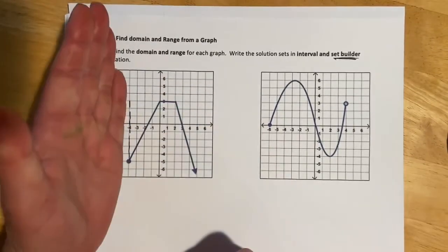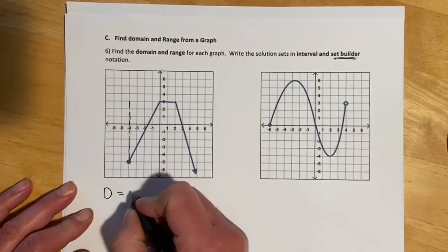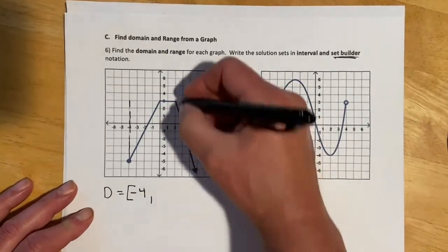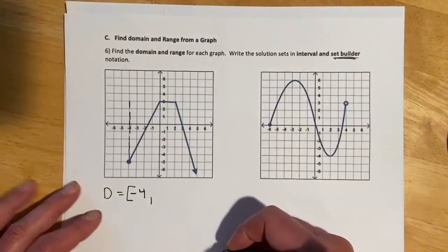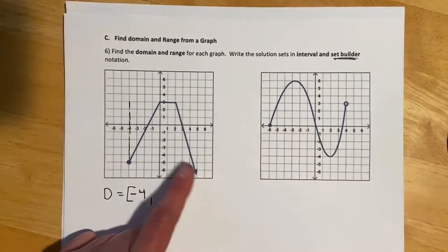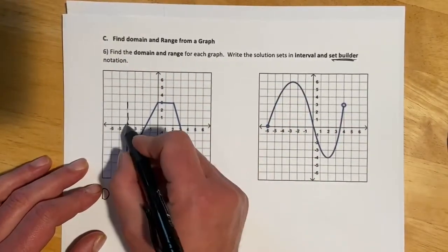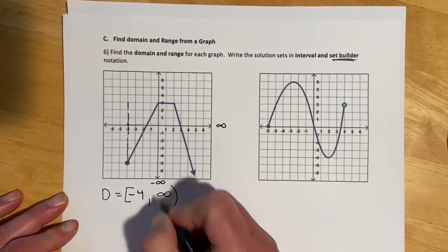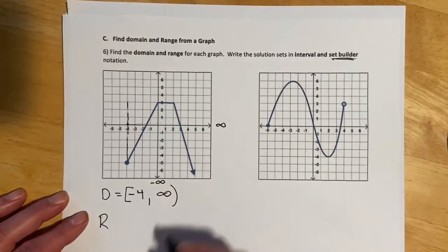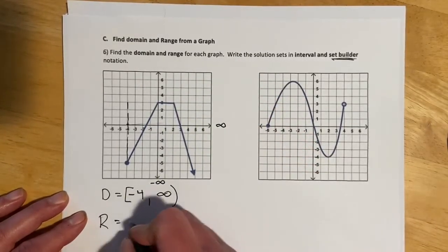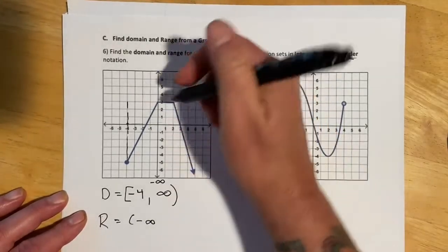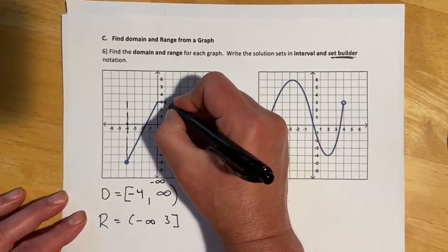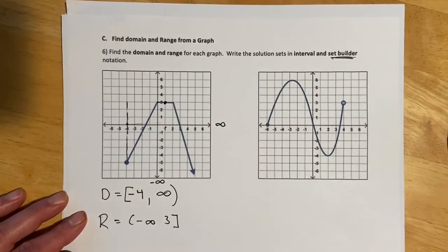The graph goes forever — it's going down and also going to the right — so in terms of X values, it starts at negative 4 and then goes forever out to positive infinity. For range, now we're looking at Y values: this does go down forever, so it goes from negative infinity up to and including 3. There is a graph there, so it's a bracket, because when X is 1, Y is 3, so 3 is absolutely included.